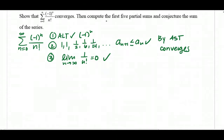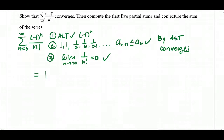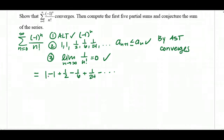Now second, we're going to compute the first five partial sums and conjecture the sum of the series. Let's write out this infinite series expanded. If I plug in 0, negative 1 to the 0 gives a positive 1 over 0 factorial, so I get 1. The terms alternate: 1 minus 1 plus 1 half minus 1 sixth plus 1 over 24 minus and so forth.